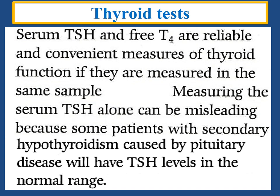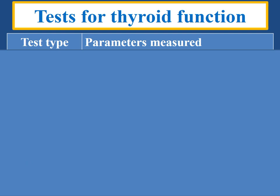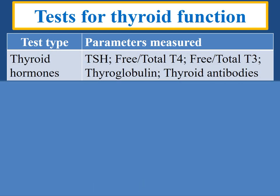Thyroid tests. Serum TSH and free T4 are reliable and convenient measures of thyroid function if measured in the same sample. Measuring serum TSH alone can be misleading because some patients with secondary hypothyroidism caused by pituitary disease will have TSH levels in the normal range. Tests include TSH, total T4, T3, total T3, estimation of thyroglobulin level in the blood, and thyroid antibody levels.